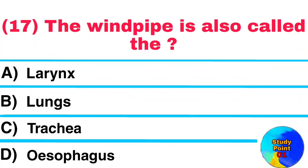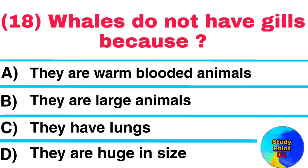Question No. 17. The windpipe is also called the — Answer: Trachea. Question No. 18. Whales do not have gills because? Answer: They have lungs.